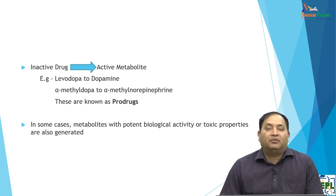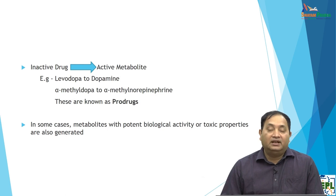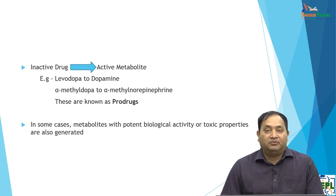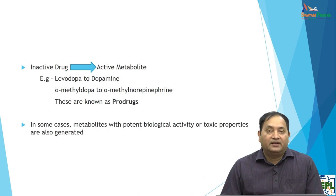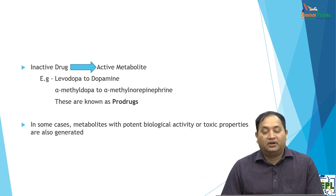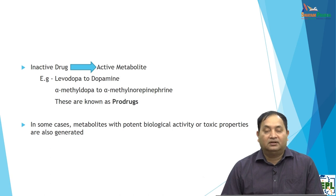There are certain situations involving prodrugs. These are inactive drugs that, following metabolism or biotransformation, release or actively form active metabolites. For example, levodopa, commonly used in Parkinsonism, is converted to dopamine. The centrally acting antihypertensive alpha-methyldopa is converted to alpha-methyl norepinephrine, producing the effect. This is a typical example of a prodrug. In some cases, the metabolite may have potent biological activity or toxic properties. Many adverse drug reactions are due to drugs being converted to active metabolites.